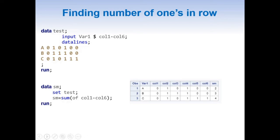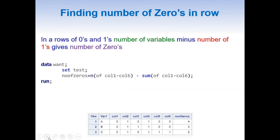Now that we have found the number of variables and also number of 1s, so in a row of 0s and 1s, number of variables minus number of 1s gives number of 0s.